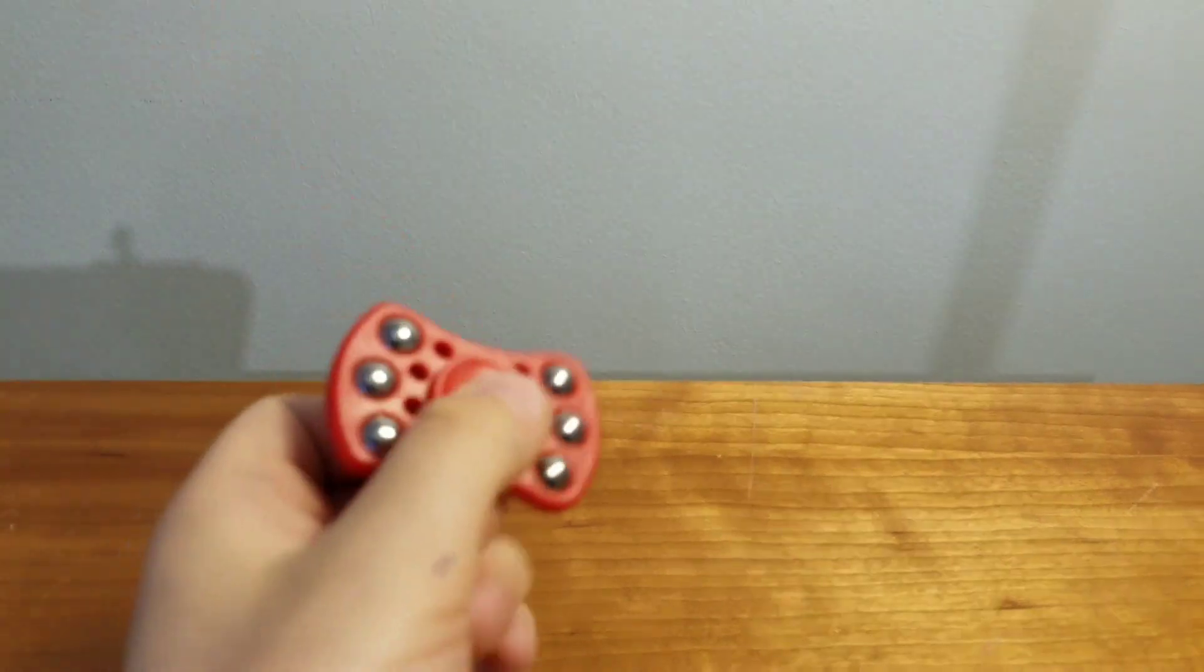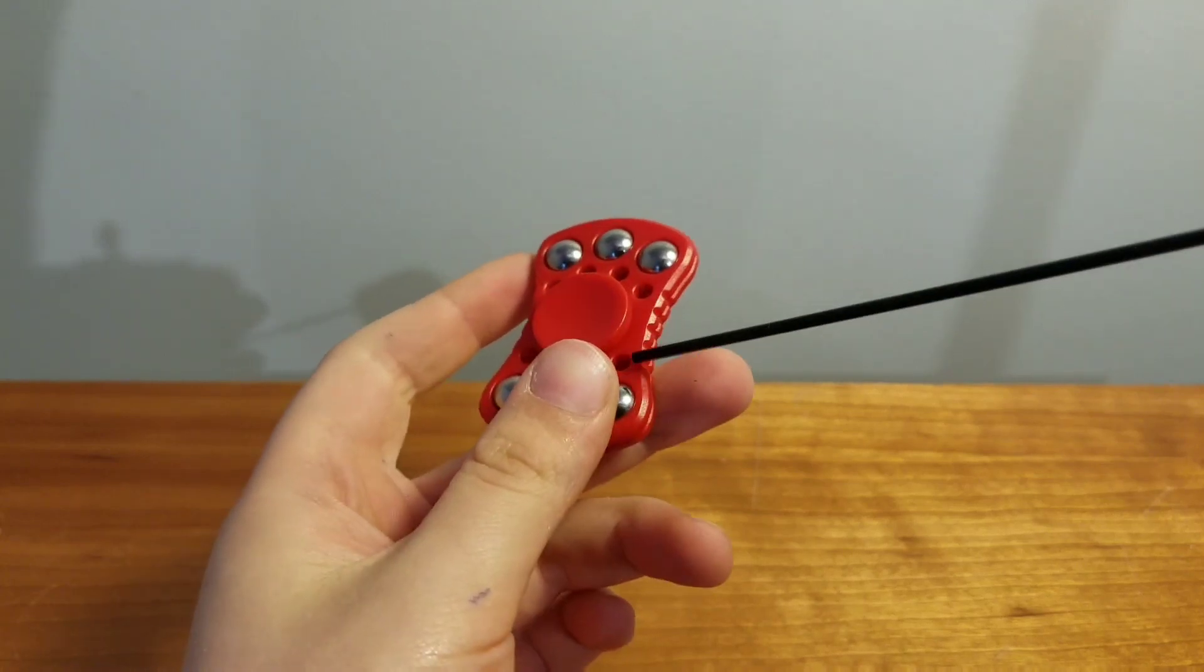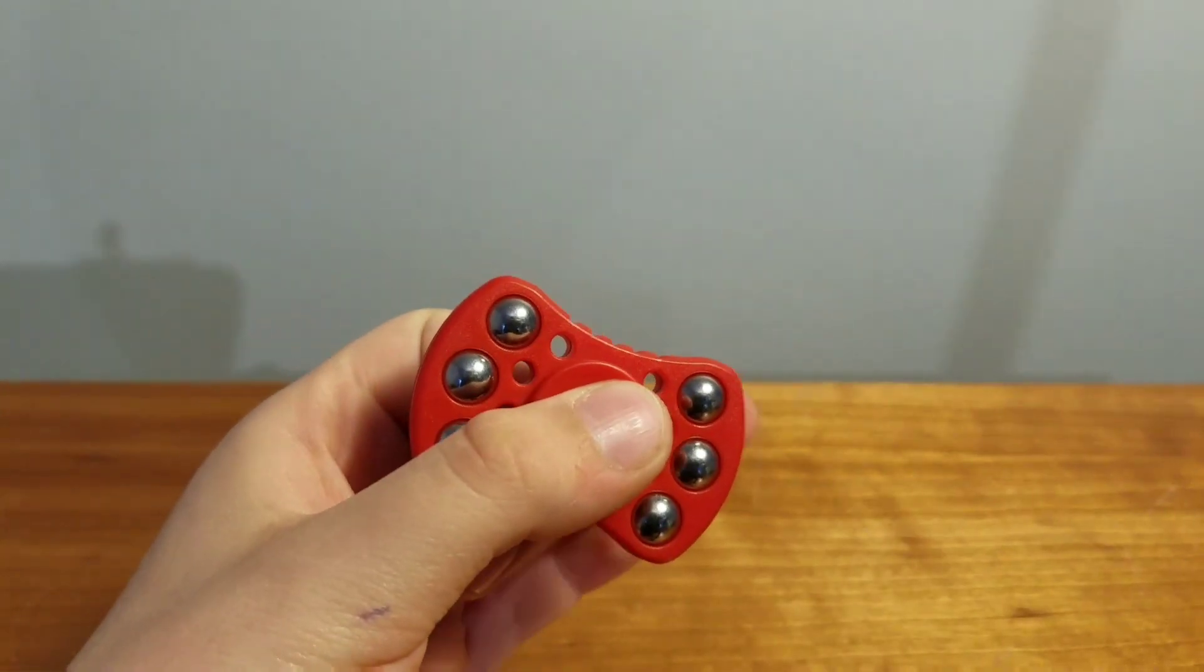So after you finish with the cleaning, you can just finish up on your last touches around the side. Now you can see the spinner spins phenomenally better.